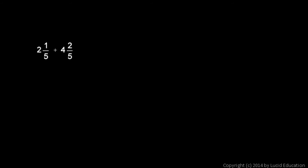Here's another example: 2 and 1 fifth plus 4 and 2 fifths. Notice here that the denominator is 5 in both cases. The fact that the denominator is the same in both of those numbers makes this one pretty easy.